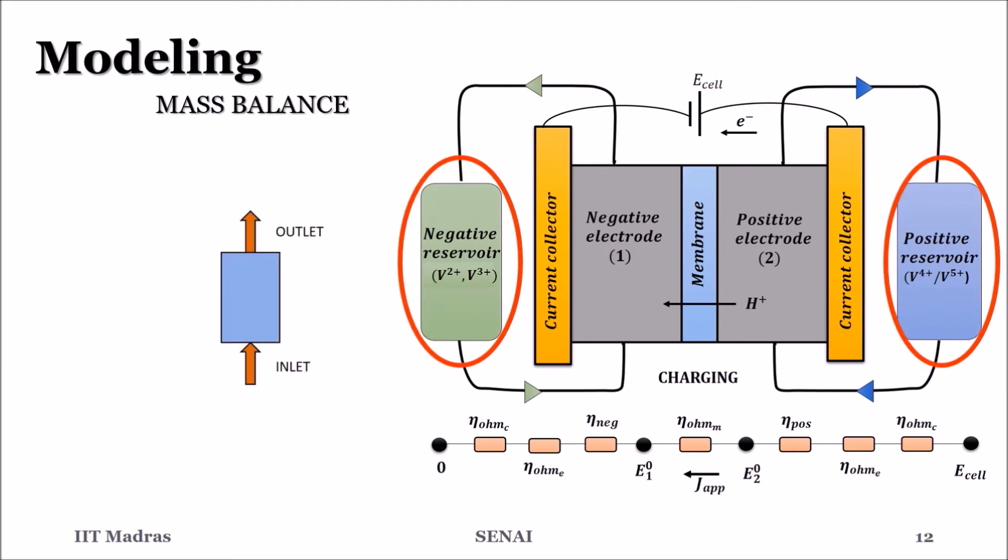Within the reservoirs, there is only mixing due to convection. No reaction occurs inside the reservoirs. The components of interest in the positive reservoir are V4, V5 and protons, whereas for the negative reservoirs, we have V2, V3 and protons.